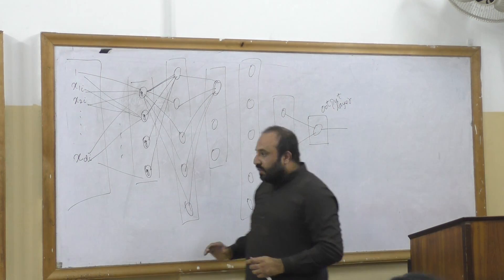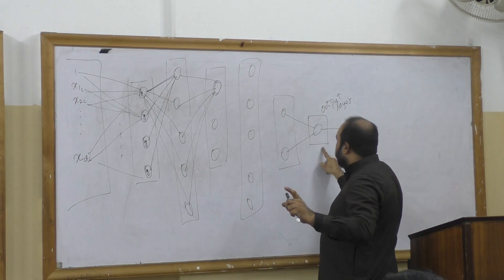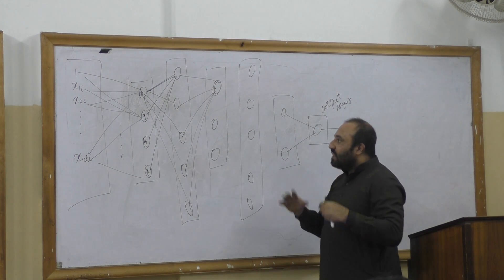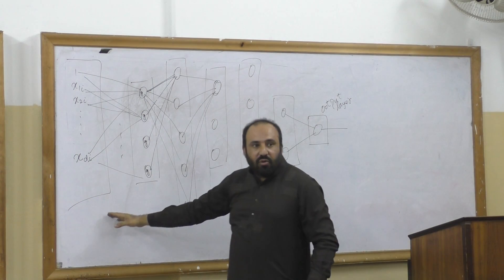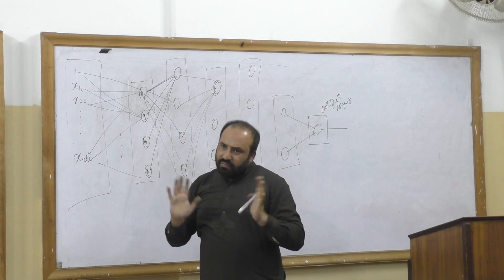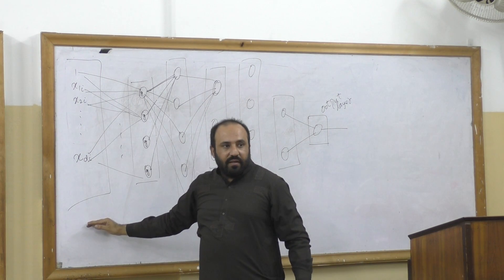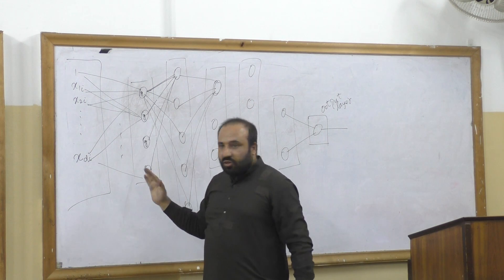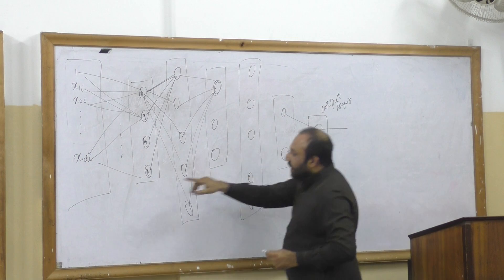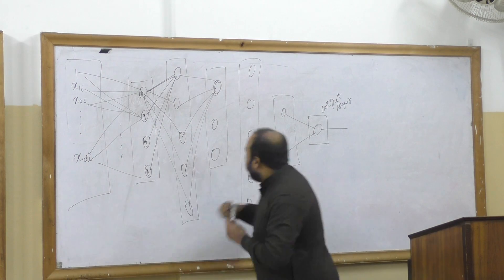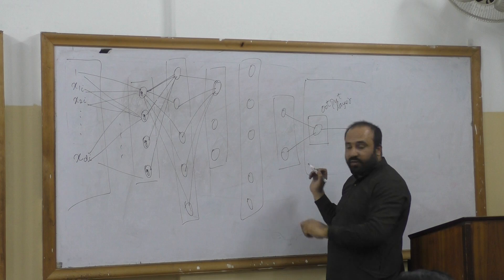So this is the input layer — one, two, three, four, five, six. This neural network is called a six-layered neural network. The input layer is not counted; that's just a tradition. People do not count the input layer in the total number. So this is a six-layer neural network. This is the input layer, this is the output layer, and this is a six-layer neural network.